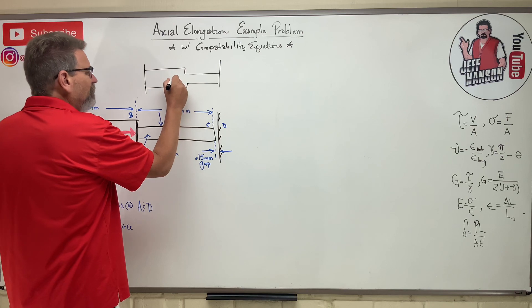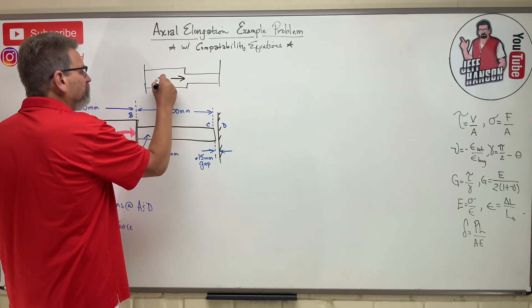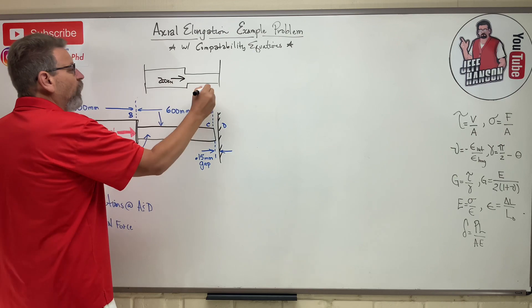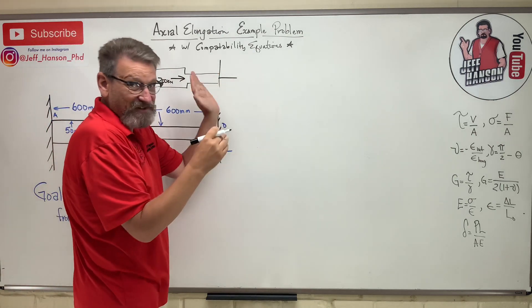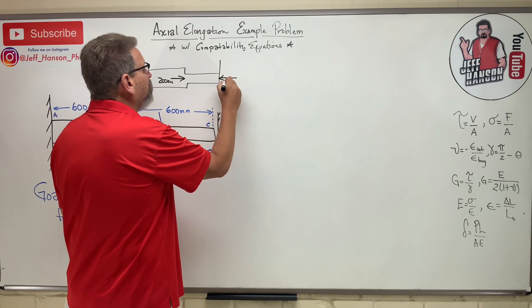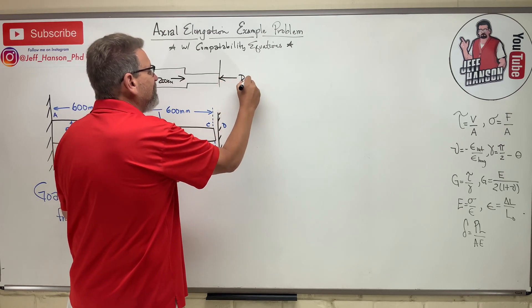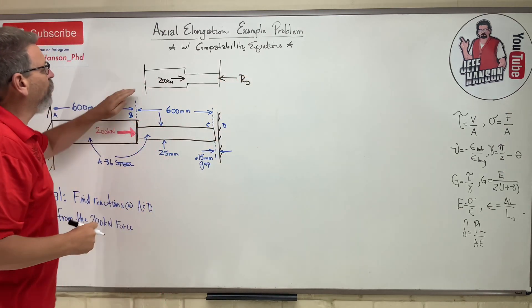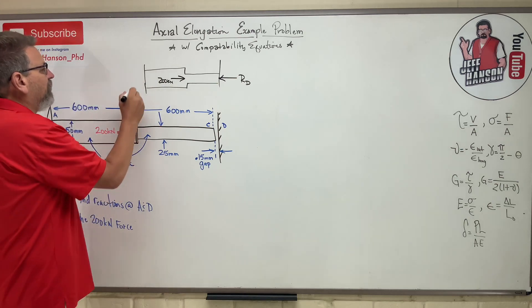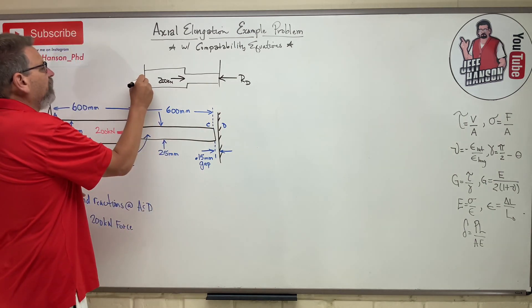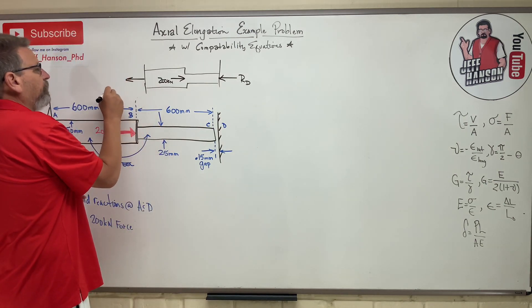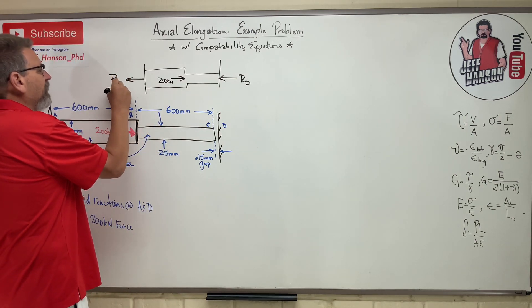Over here, this is going to be touching the wall and compressing into the wall. So the wall is going to be pushing back. So there's going to be a reaction at D. And then over here, the 200 kilonewtons is going to cause it to try and pull off of this wall. And so this wall's reaction is to pull this way. We'll call that the reaction at A.